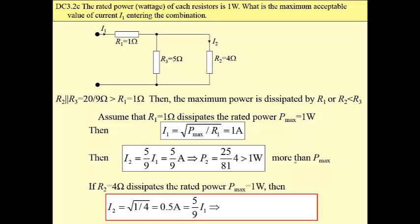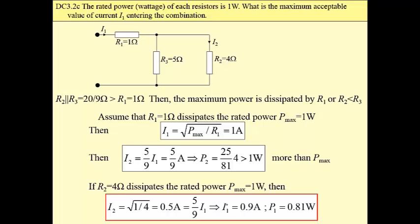We have to then assume that R sub 2 dissipates the rated power to find current. We have a current divider to find the current that enters a combination. And then we may find, so this is a current, 0.9, this is the answer to our problem. For this current, power dissipated by R sub 1 obviously is less than the rated one. It is 0.81 watt.